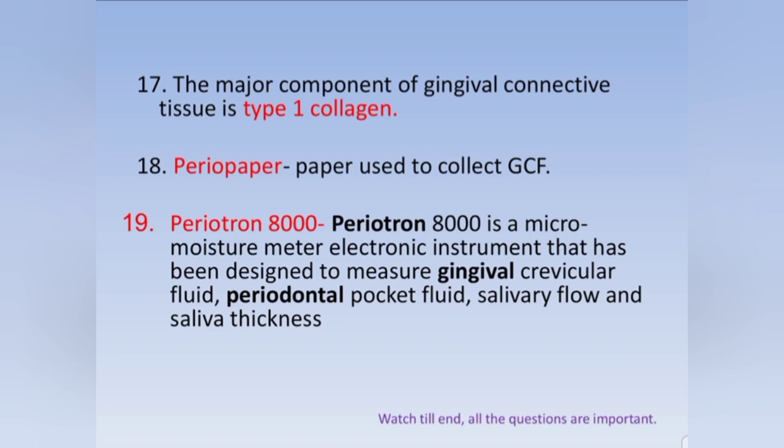Periopaper is used to collect GCF. Periotron 8000 — or Periotron — is a micro-moisture meter, an electronic instrument designed to measure GCF fluid, periodontal pocket fluid, salivary flow, and saliva thickness.